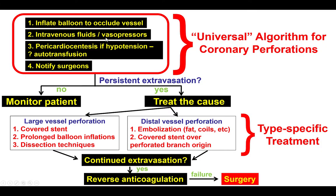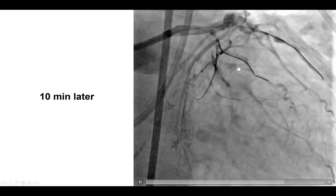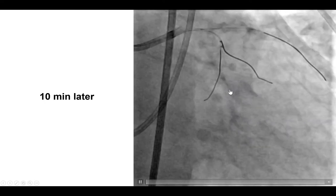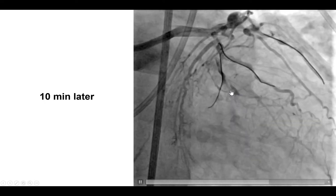The algorithm for coronary perforations: first, inflate a balloon to occlude the vessel. The patient was on ECMO, so fluids and pericardiocentesis were considered. Surgeons were alerted in case surgery was needed to evacuate the hematoma. Since this was a distal vessel wire-caused perforation, treatment options include embolization or covering the perforated branch origin. Balloon inflation was done, but after 10 minutes there was still continued extravasation along the course of the guide wire.